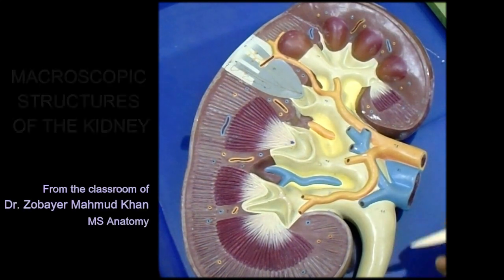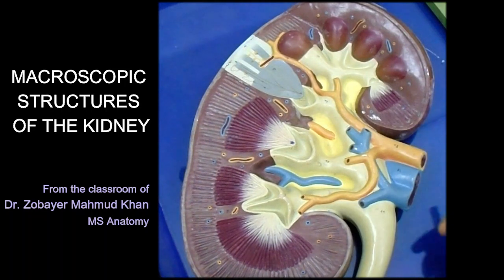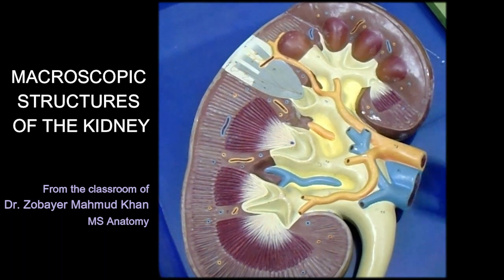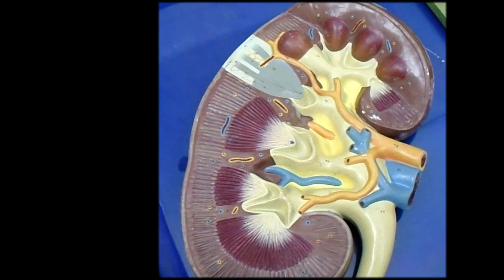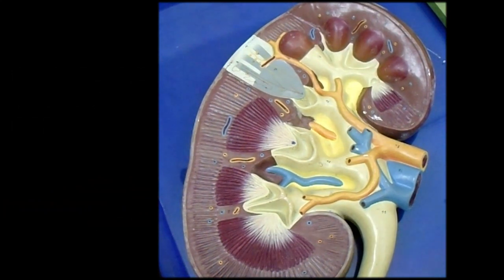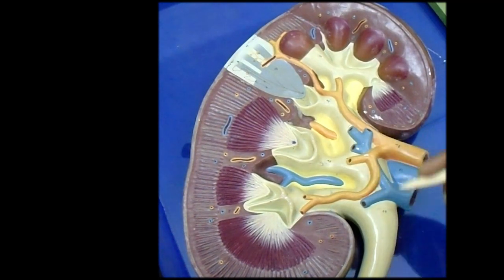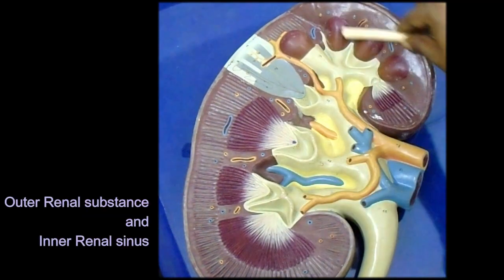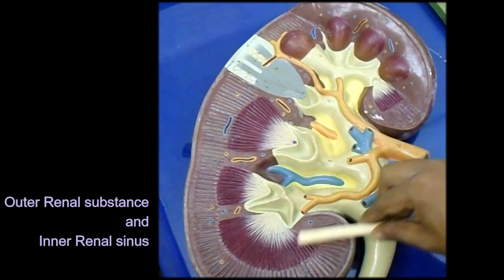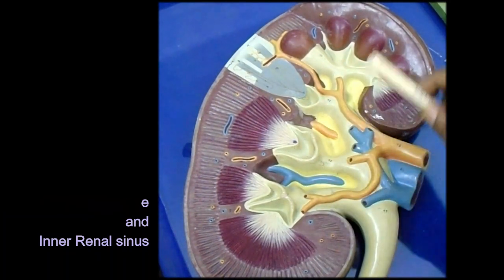Dear students, we will now see the structures that are seen after the coronal section of a kidney. On coronal section, the kidney presents two parts: outer renal substance and inner renal sinus.